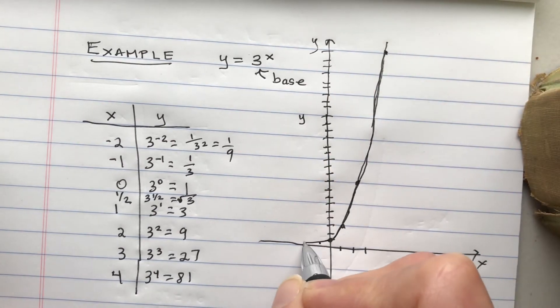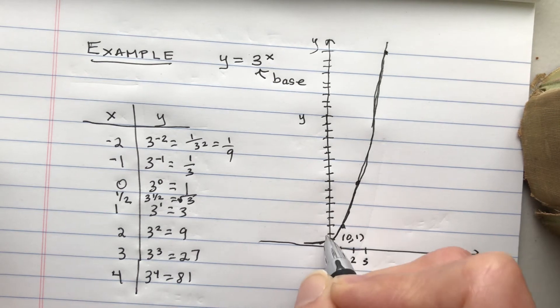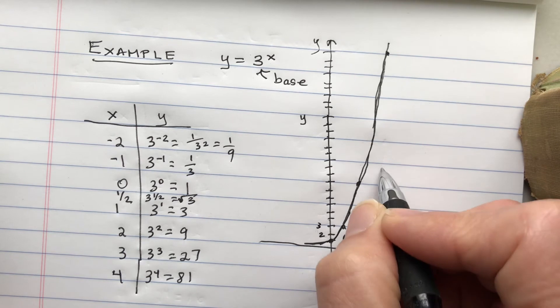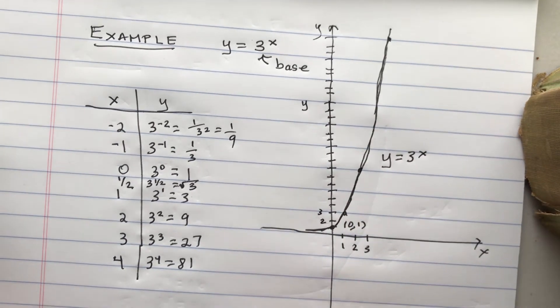But the general shape is the same. We have 0, 1 is the y-intercept. And that's always a feature of an exponential function.